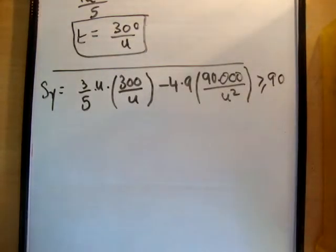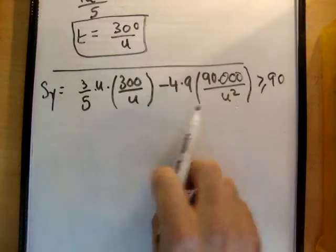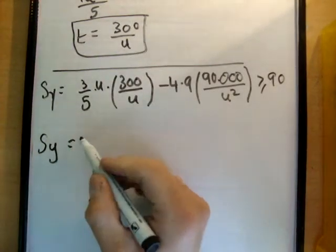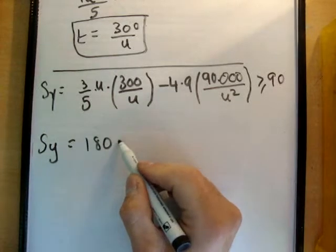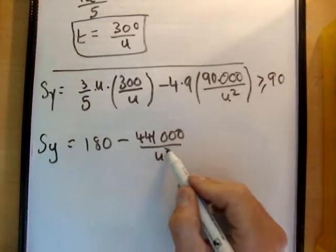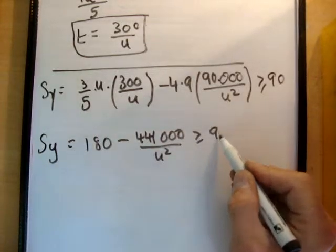So how do we solve this? We just need to solve it for u. So basically if we just rearrange that, you're going to get the following. 180 minus 44,100 over u squared being greater or equal to 90 meters.